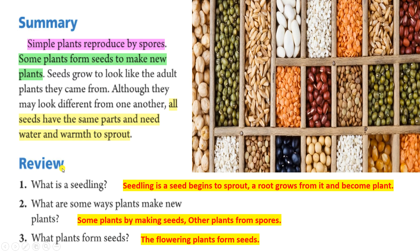Review. 1. What is a seedling? A seedling is when a seed begins to sprout, a root grows from it and it becomes a plant. 2. What are some ways plants make new plants? Some plants by making seeds, other plants from spores. 3. What plants form seeds? The flowering plants form seeds.